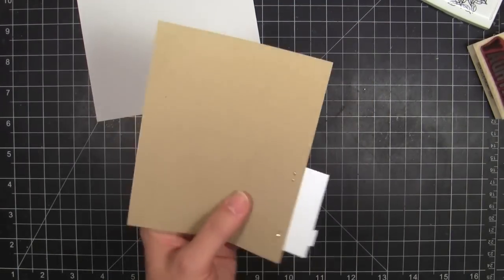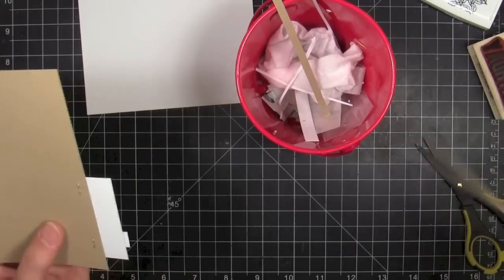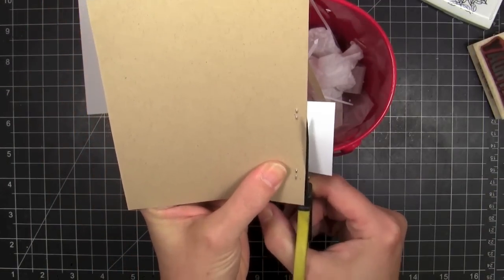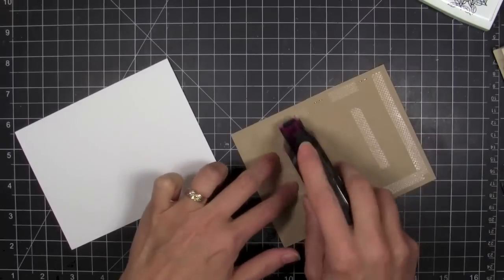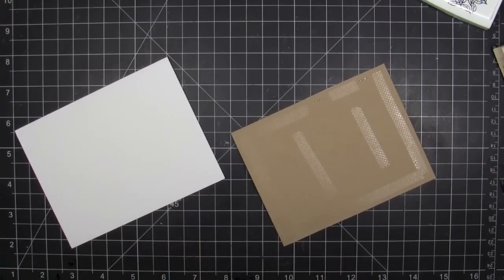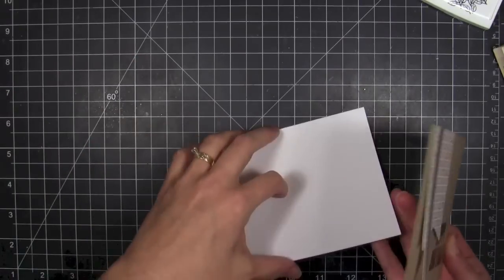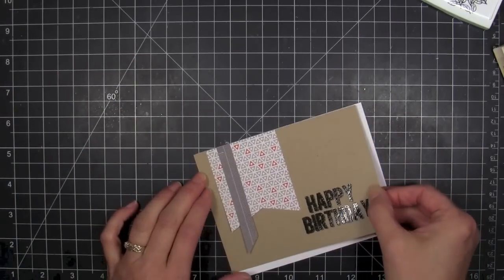So now that I have that secured there to that panel, I'm going to trim off the excess. And I used the tiny attacher. I love those little staples. And just stapled it to that panel. You do have to kind of think ahead when you're going to do this if you want the staples to be concealed behind that panel and not show through the entire card front. So I was glad I thought ahead.